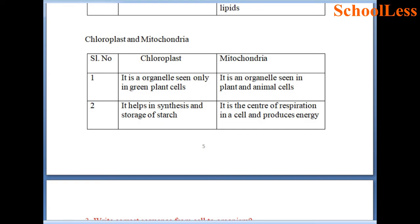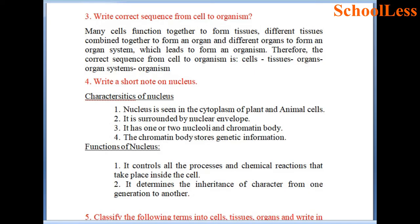Cell wall versus cell membrane: cell wall is seen only in plant cells whereas cell membrane is seen in both plant and animal cells. Chloroplast helps in synthesis and storage of starch, whereas mitochondria is the center of respiration in a cell.